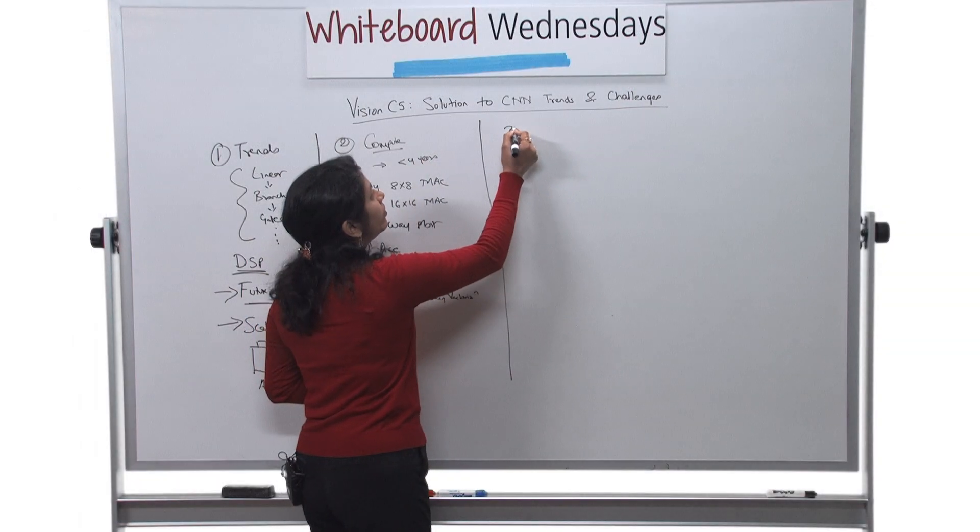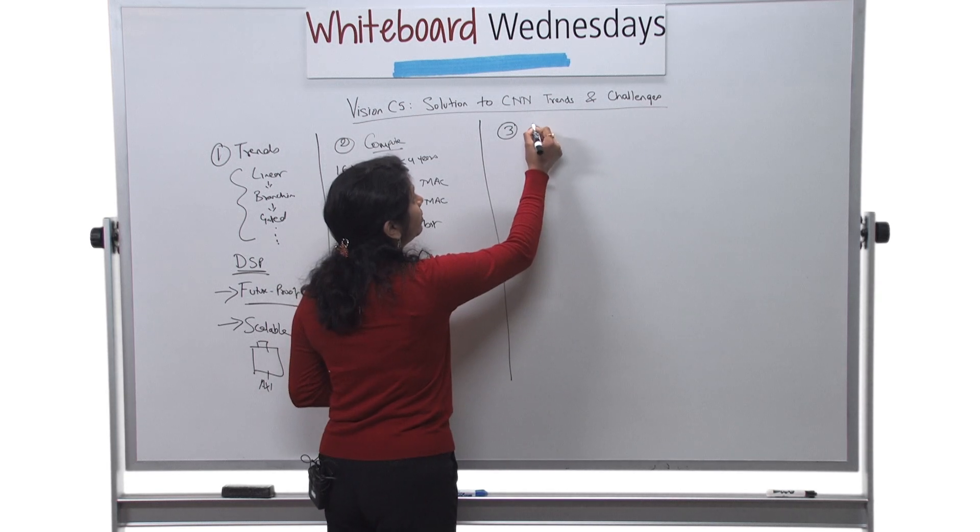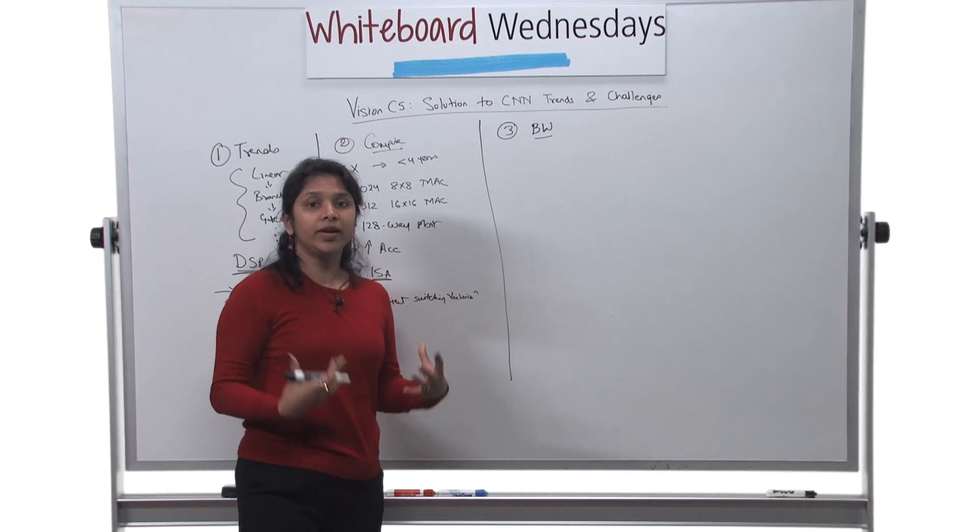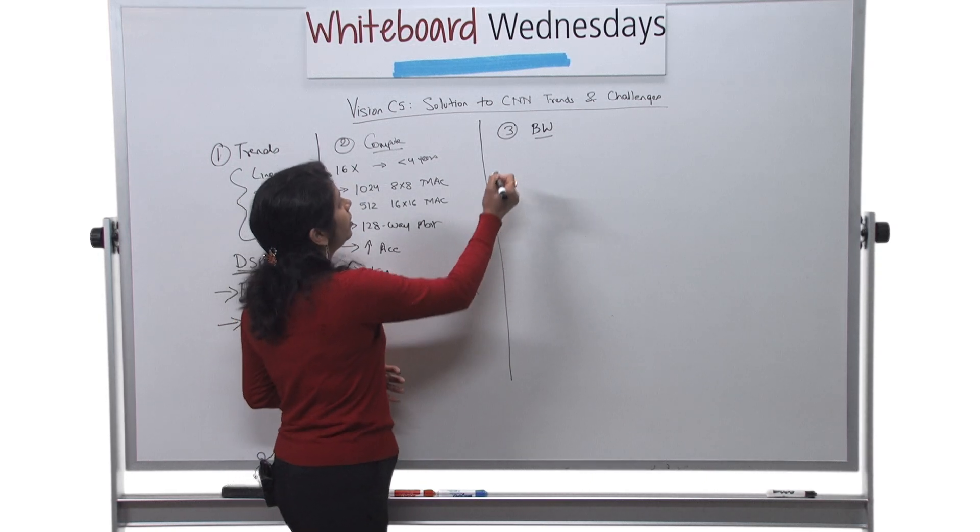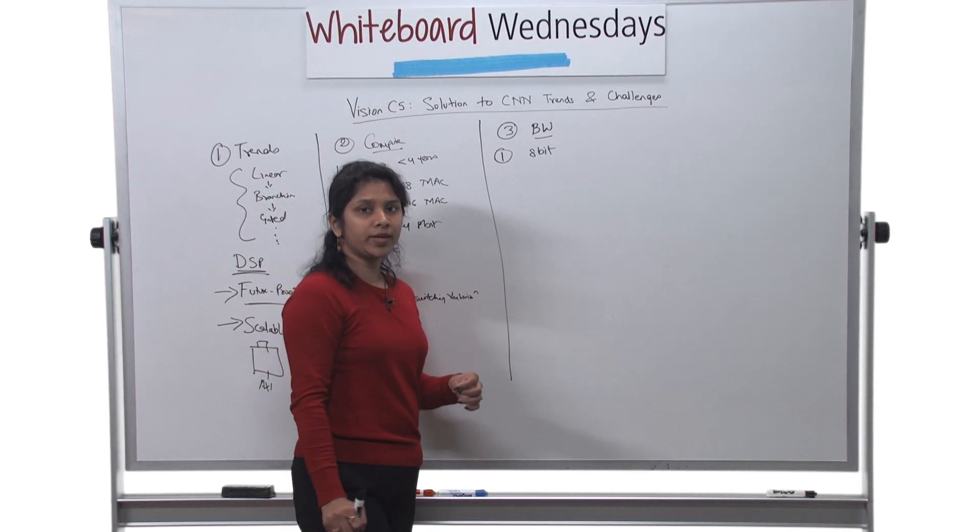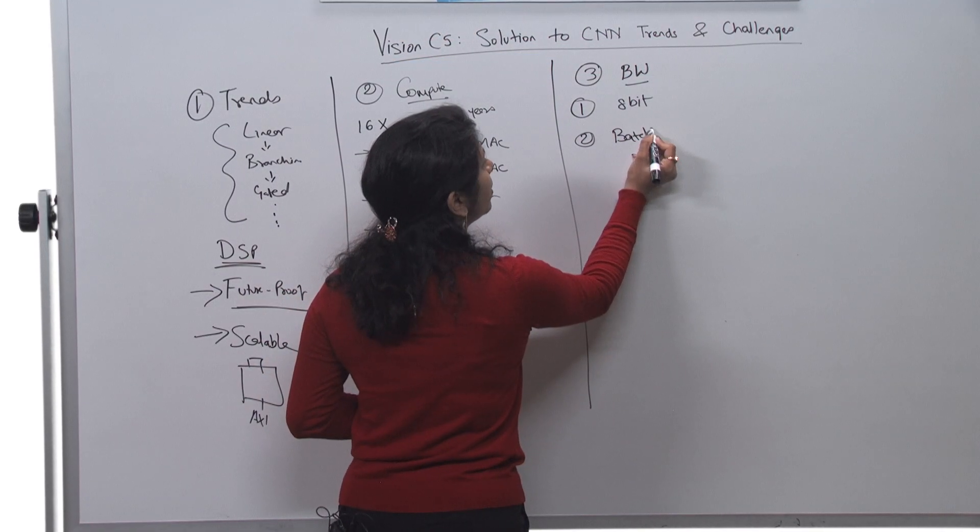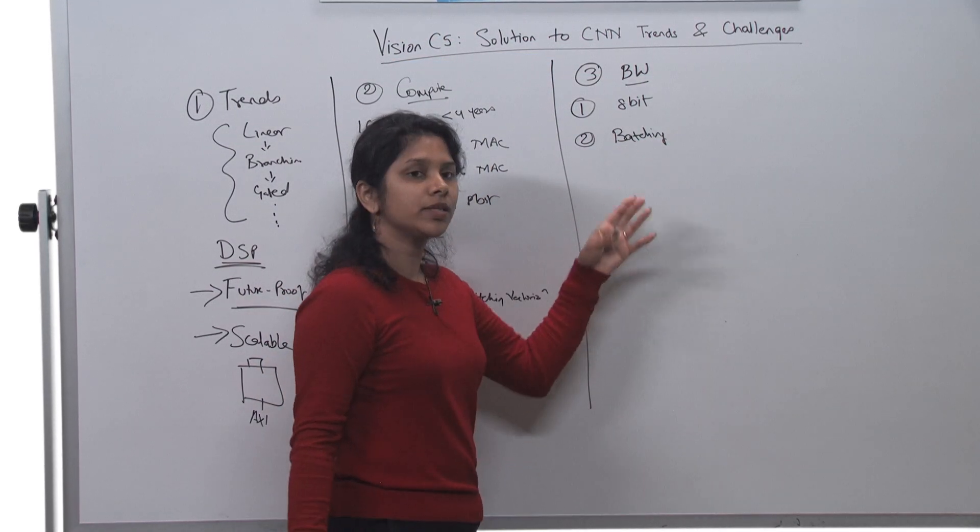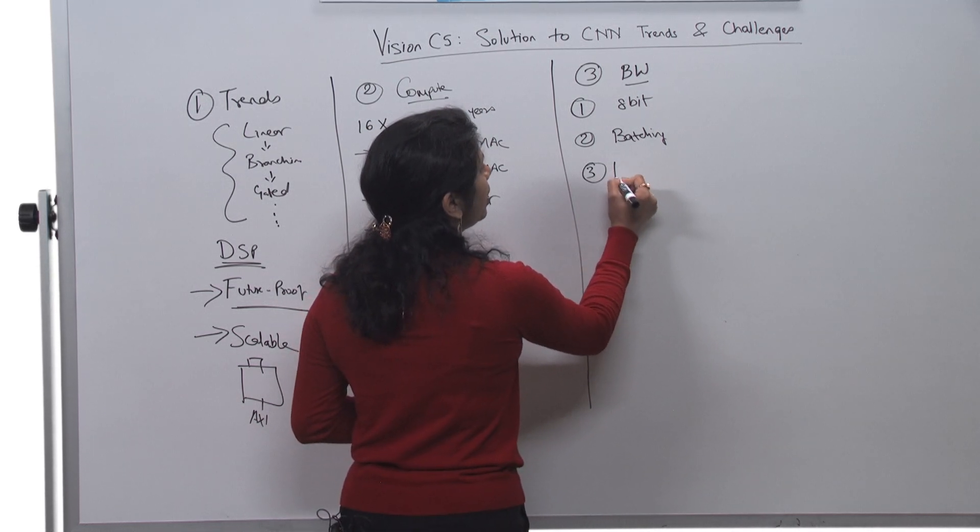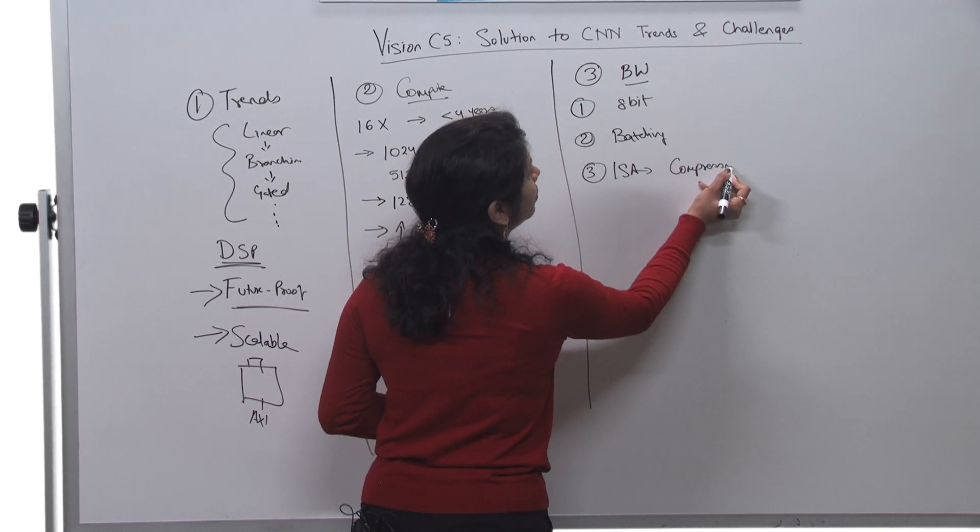Then the third and one of the important factors is bandwidth. This is a very common challenge we are facing in CNN. The data, they are very data heavy, so what to do for that? As we have already seen, we support 8-bit, so that's automatically 4x improvement compared to floating point. We also do batching, as I have talked about in my previous sessions. This helps us in mostly layers like fully connected, helps a lot.